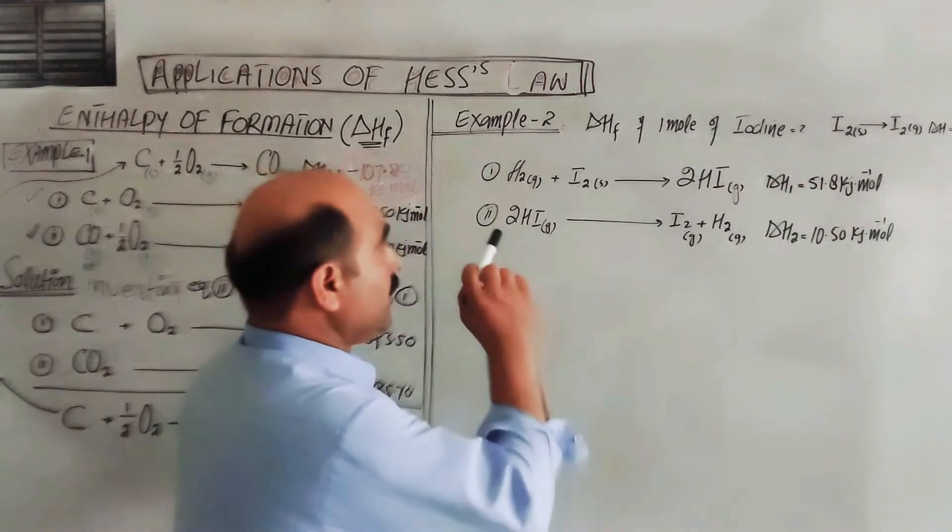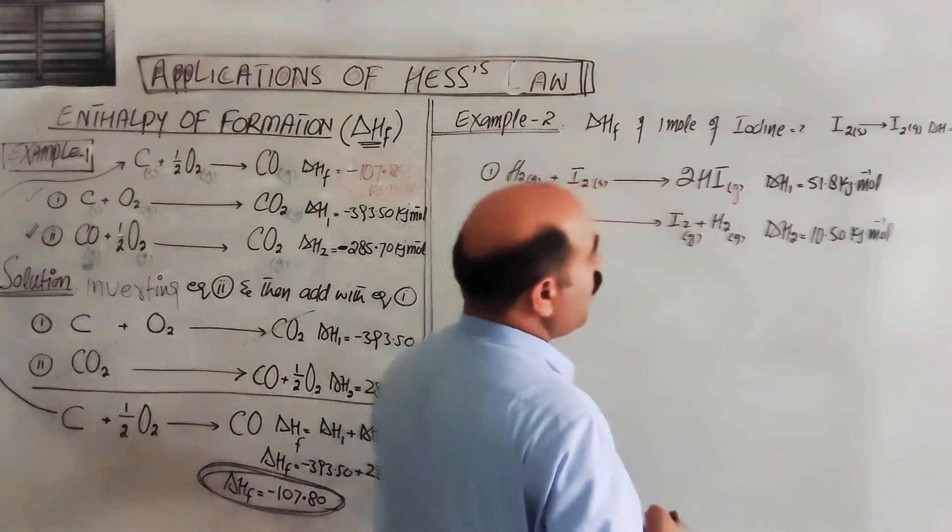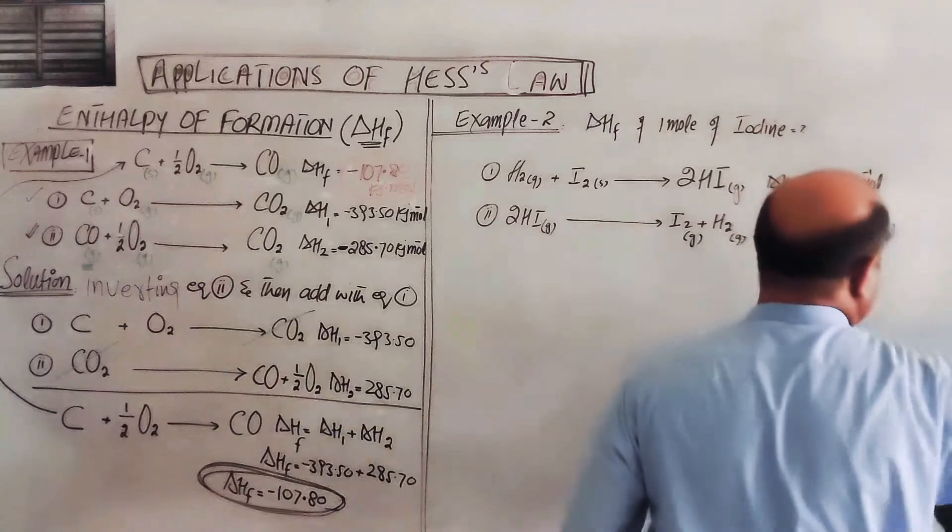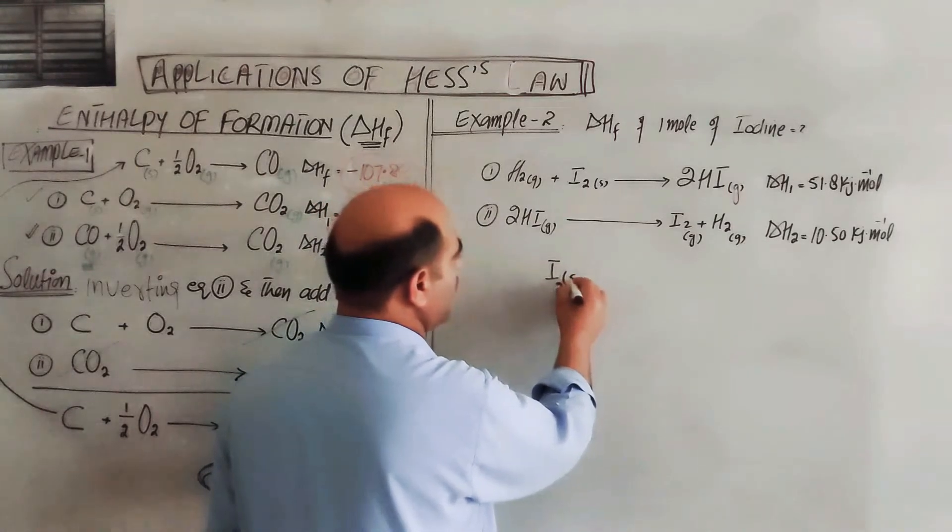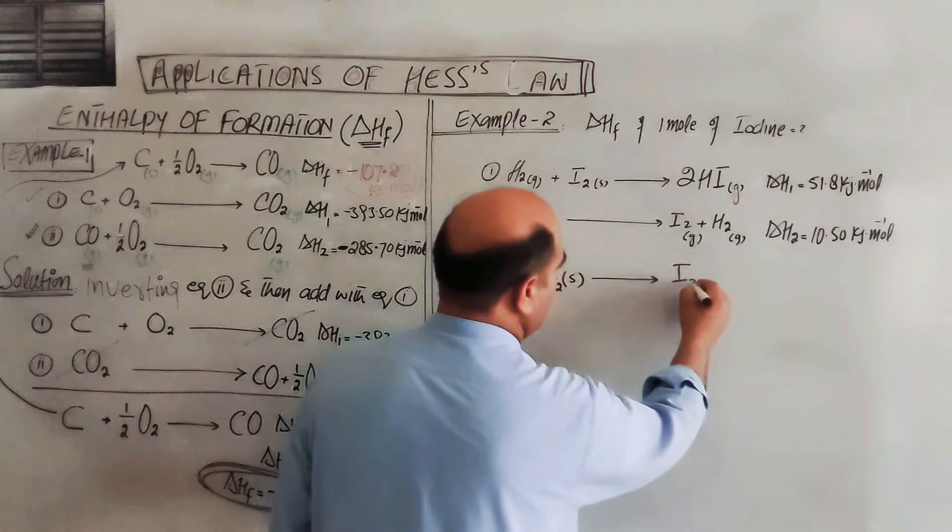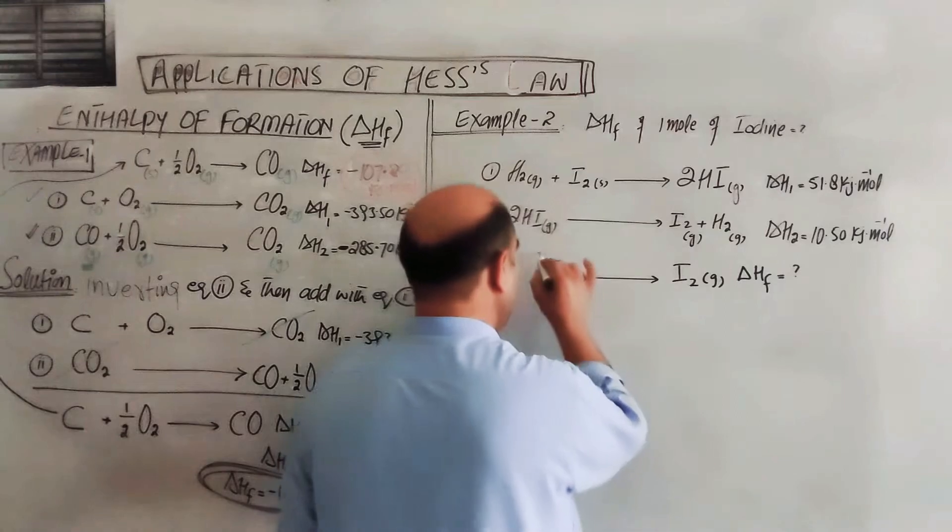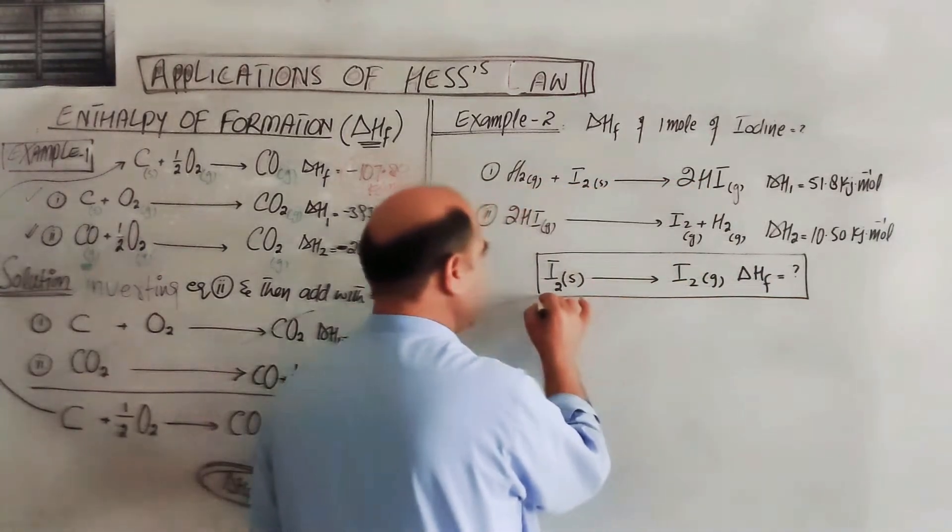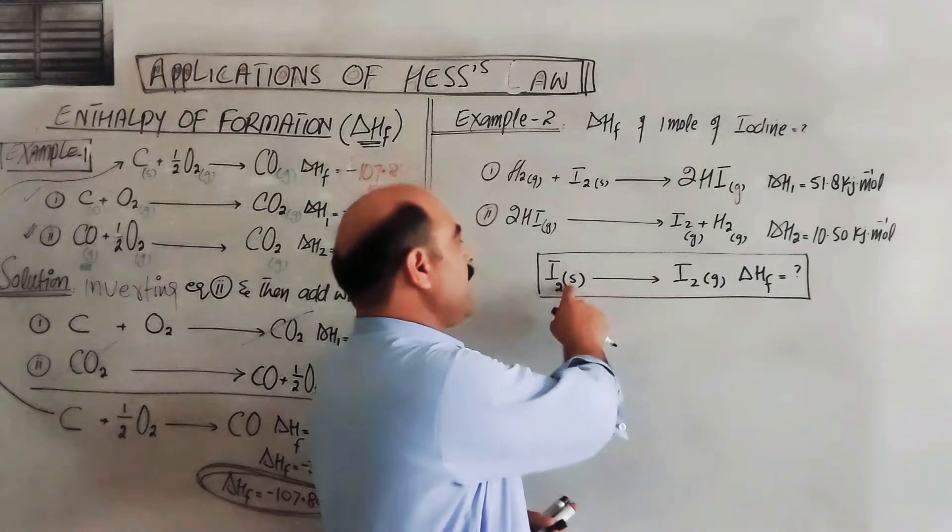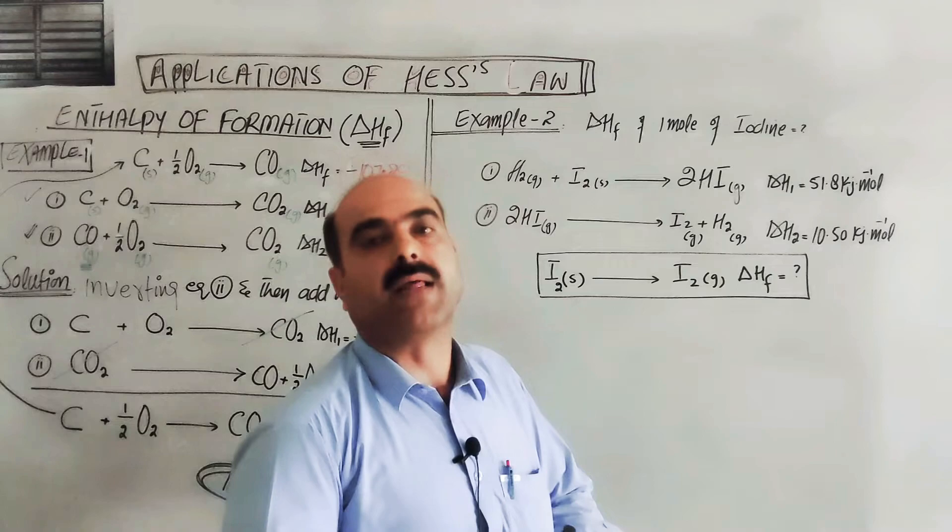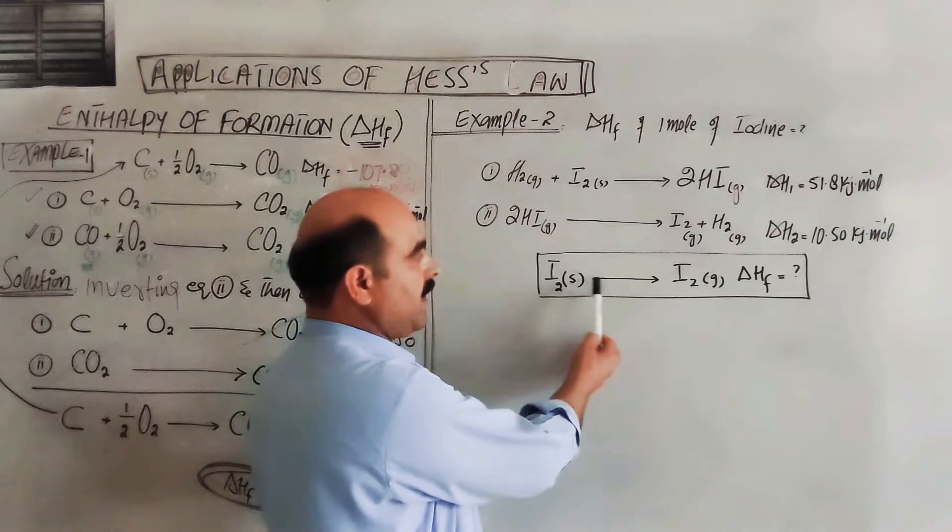Second example: Calculate enthalpy change for the formation of one mole of iodine. We need to find enthalpy change for iodine. Iodine in solid state, I2 in diatomic state, solid state - we sublime it to iodine in gaseous state. The enthalpy of formation will be calculated. One mole iodine in solid state is converted to one mole iodine in gaseous state. The enthalpy will change. Obviously, going from solid to gas requires energy, heat must be provided. This is an endothermic process so the answer will be positive. This process is sublimation - direct conversion of solid into gaseous state bypassing the liquid state. The heat is called heat of sublimation.